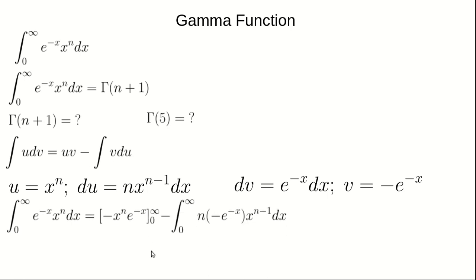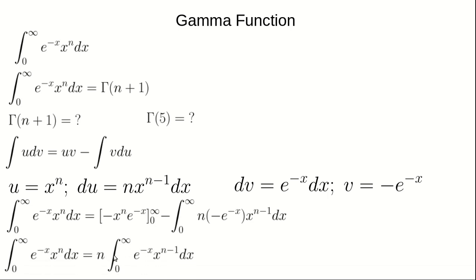Substituting into the integration by parts formula, we have u equal to x^n and v equal to minus e^(minus x), evaluated at limits zero to infinity. When we substitute the limits into the boundary term it vanishes to zero, and we are left with n coming out, with the two minus signs neutralizing each other.